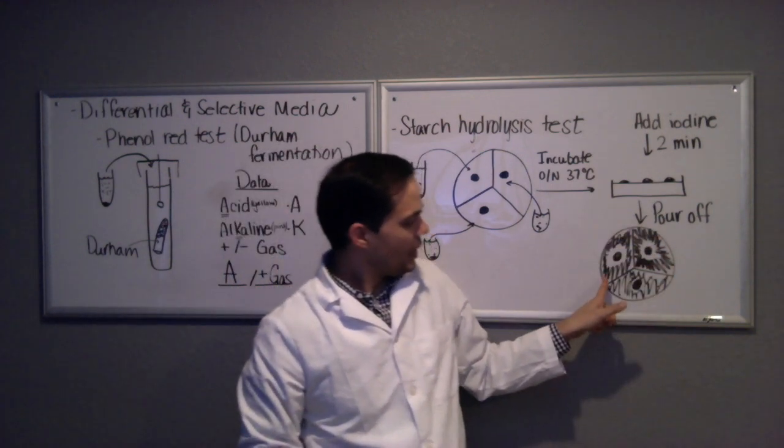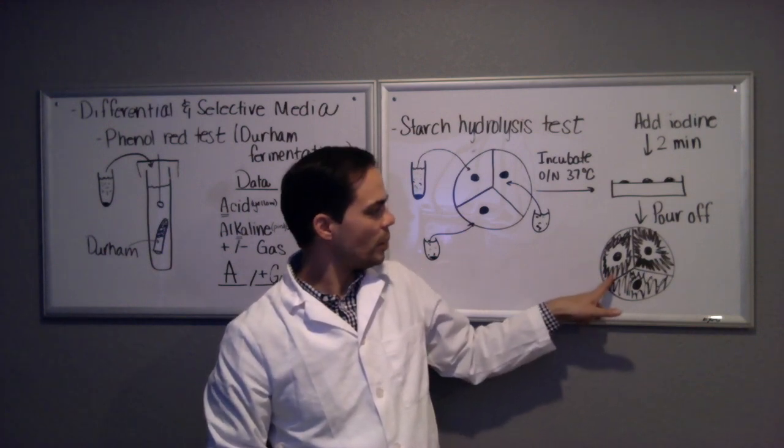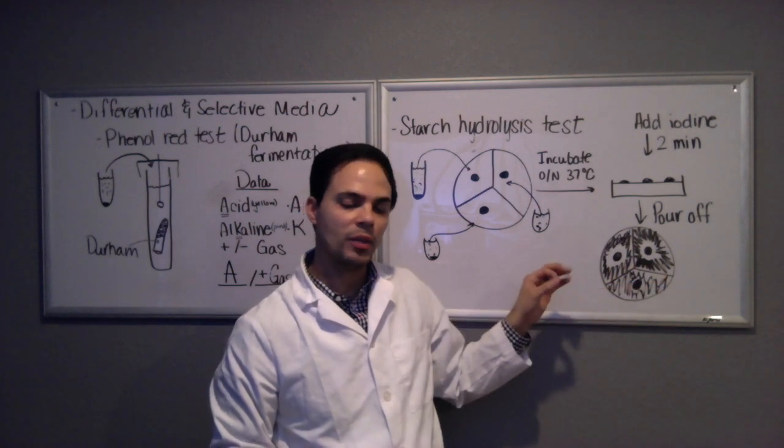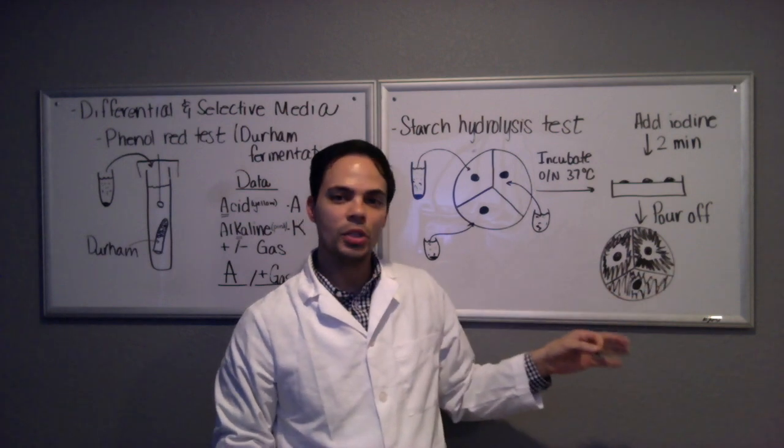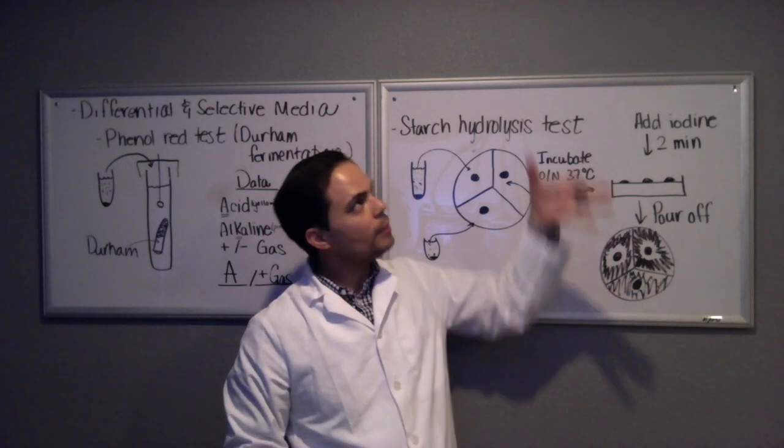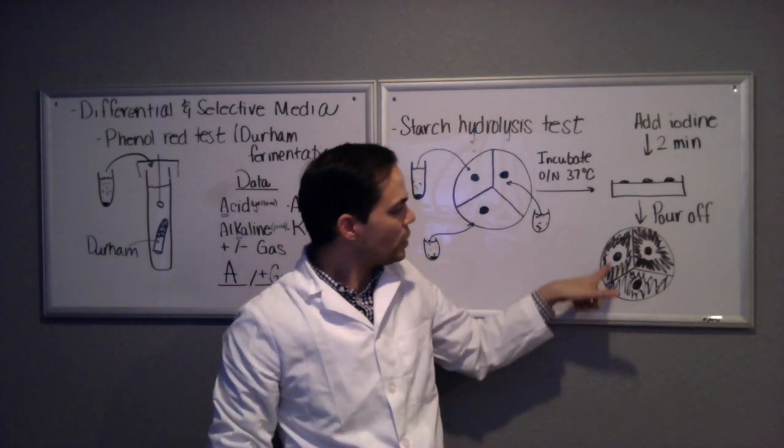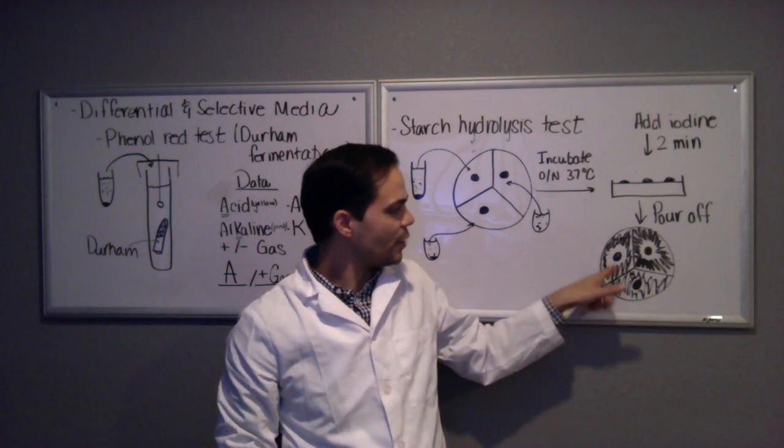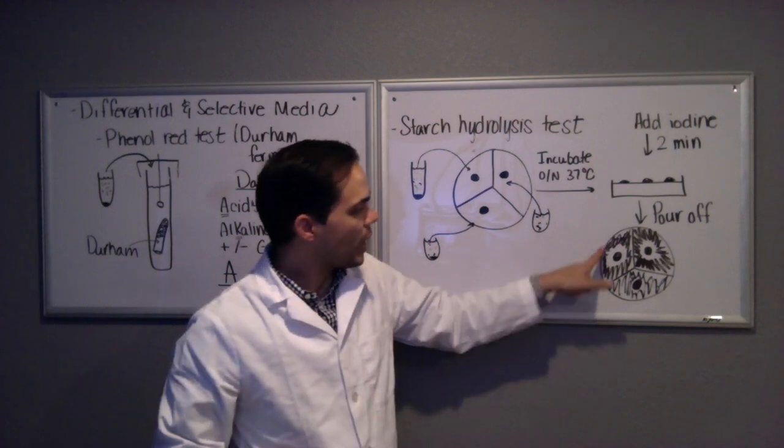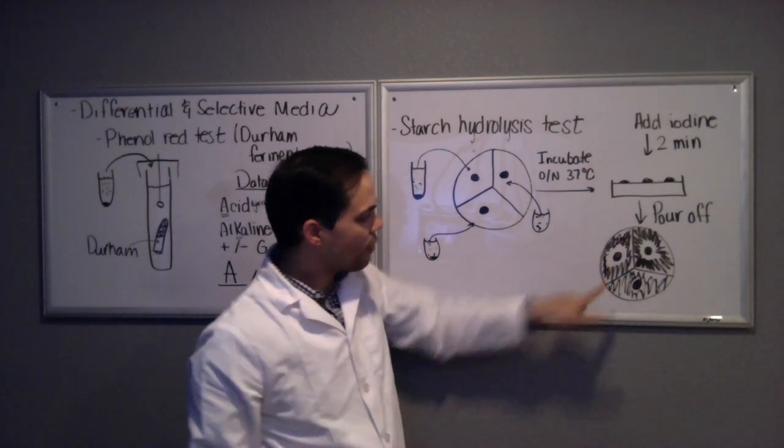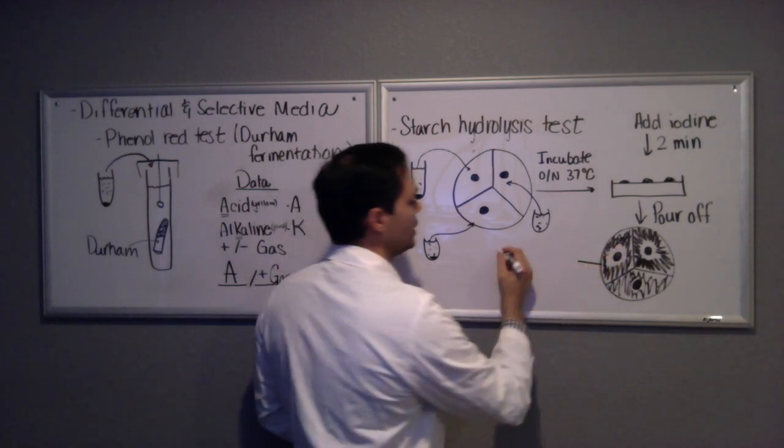Any starch that was not degraded by the bacteria or eaten up by the bacteria will appear black because iodine when it reacts with starch turns black. So anywhere on here that's black indicates that starch is present. Now if you hold the plate up to the light you'll see that there's a clearing around the actual colony, and that's indicating they're releasing exoenzymes, releasing the amylase to break down the starch in those regions. So this particular bacterium is amylase positive.